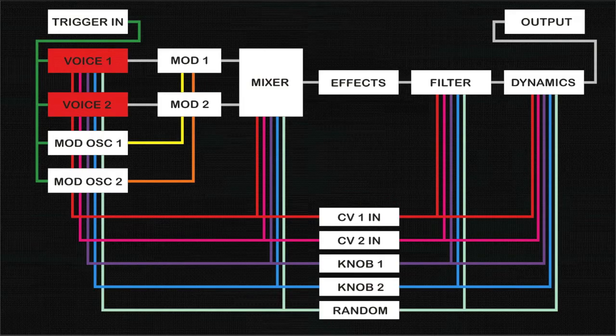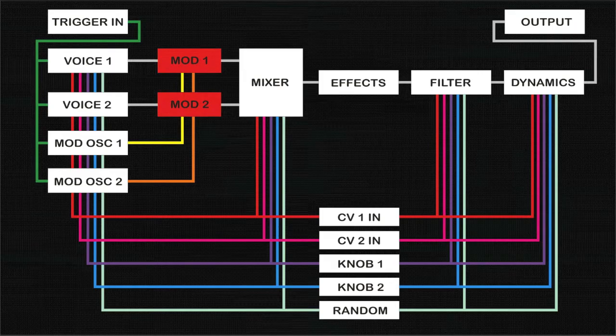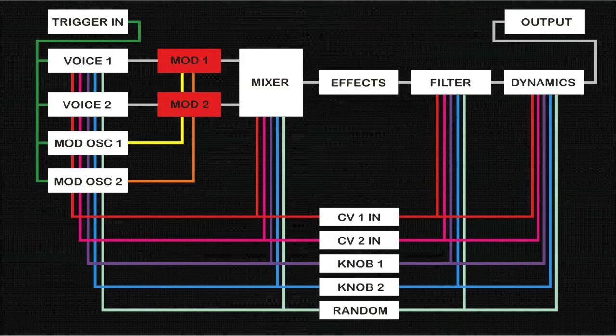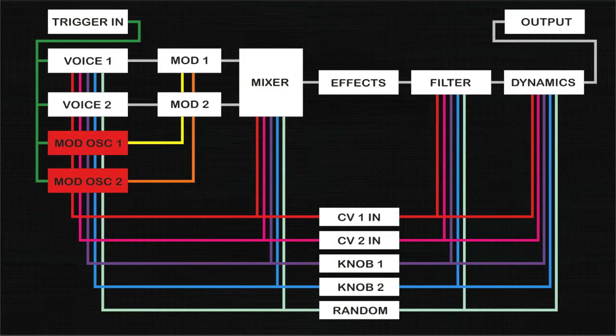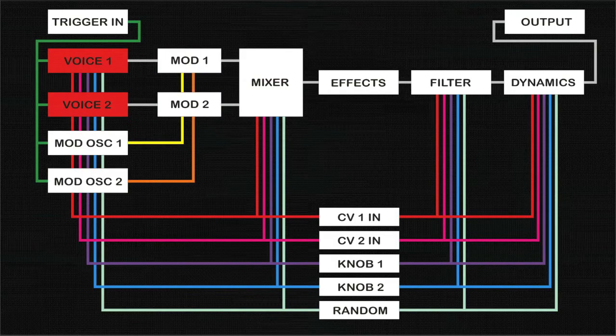The output of each voice then feeds into the Mod 1 and Mod 2 functions. These mod functions allow you to do things like mute the sample, bypass this stage to play the sample unaffected, apply amplitude modulation, or ring modulation using the modulation oscillators or the samples selected for each voice.